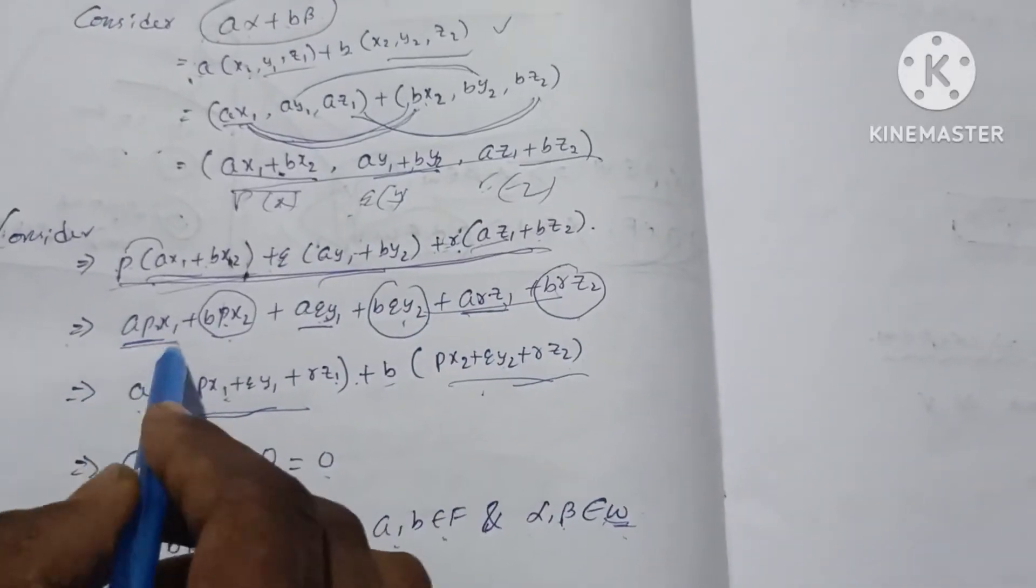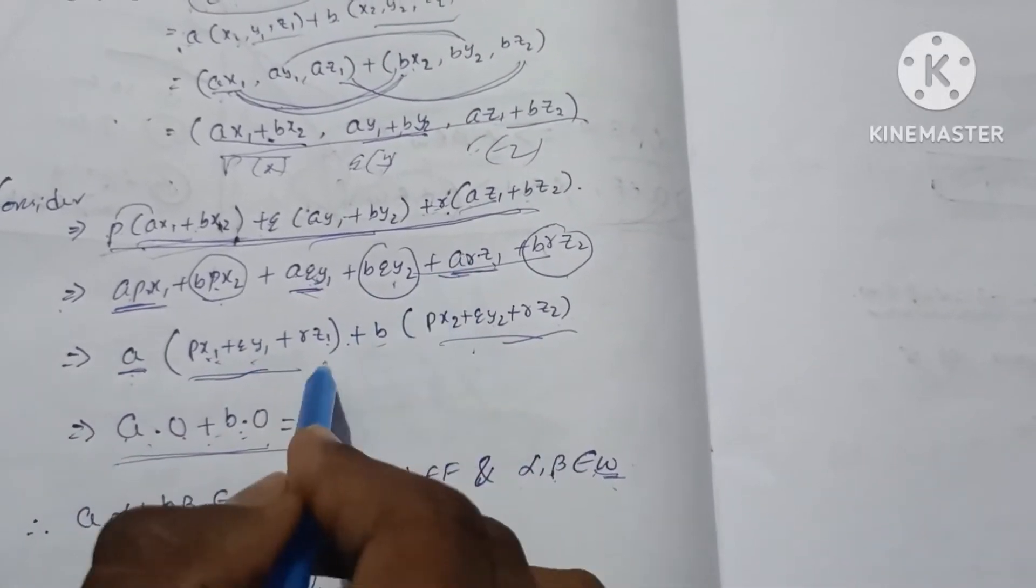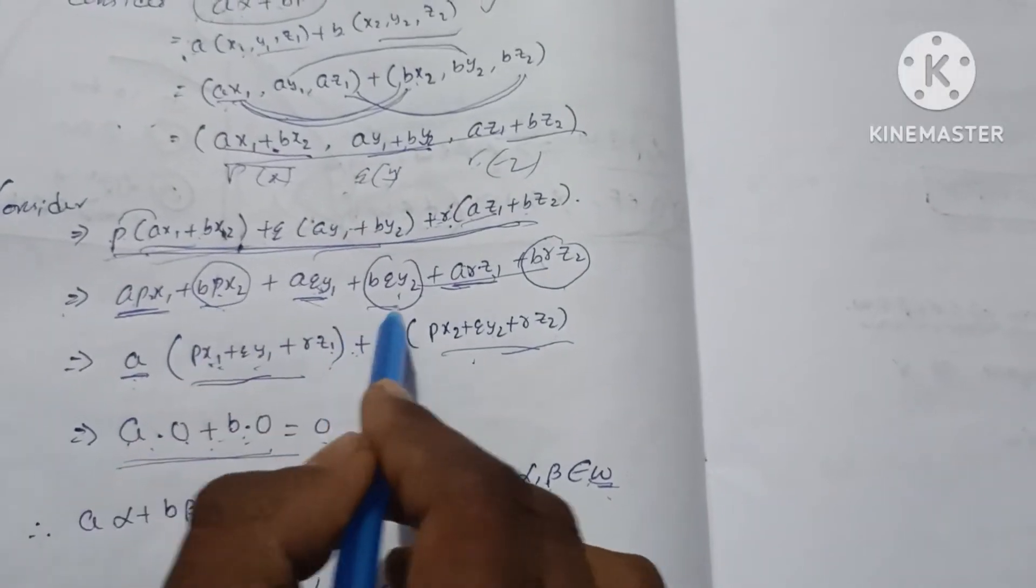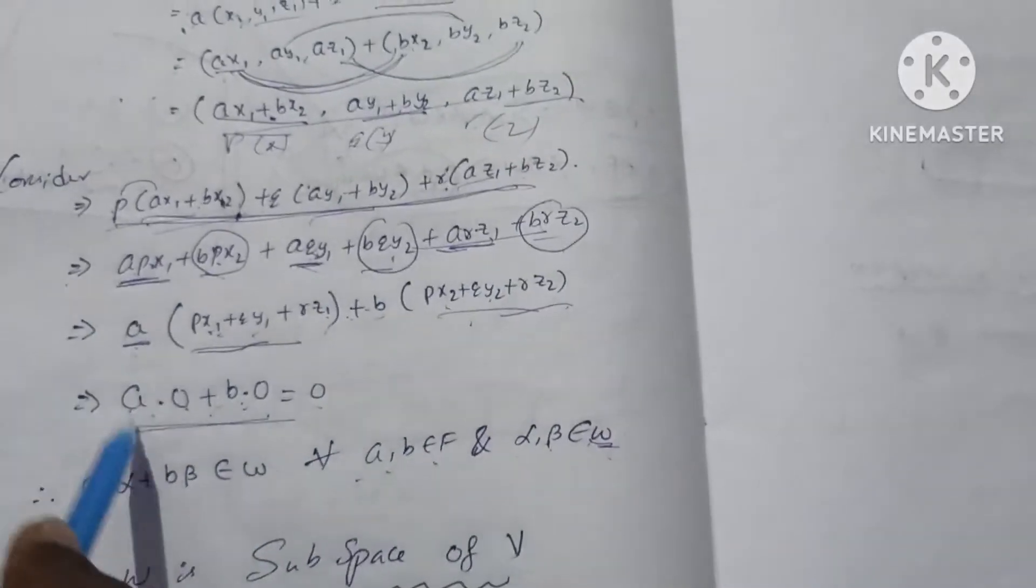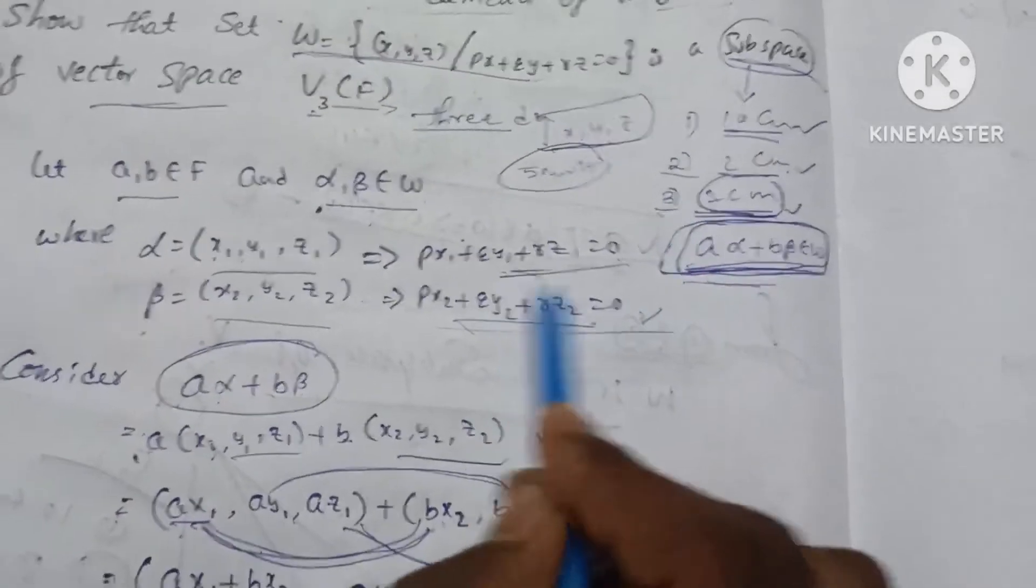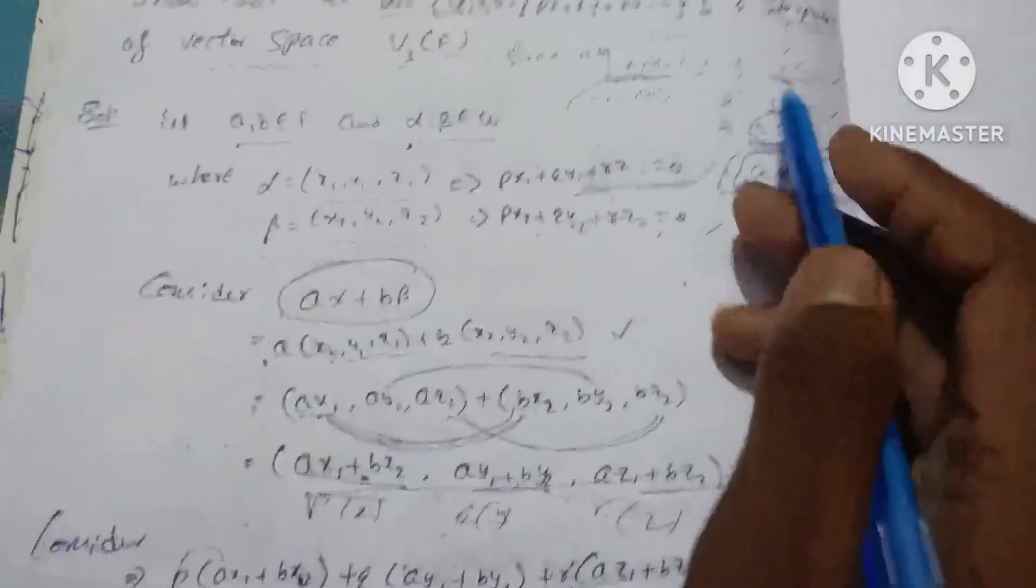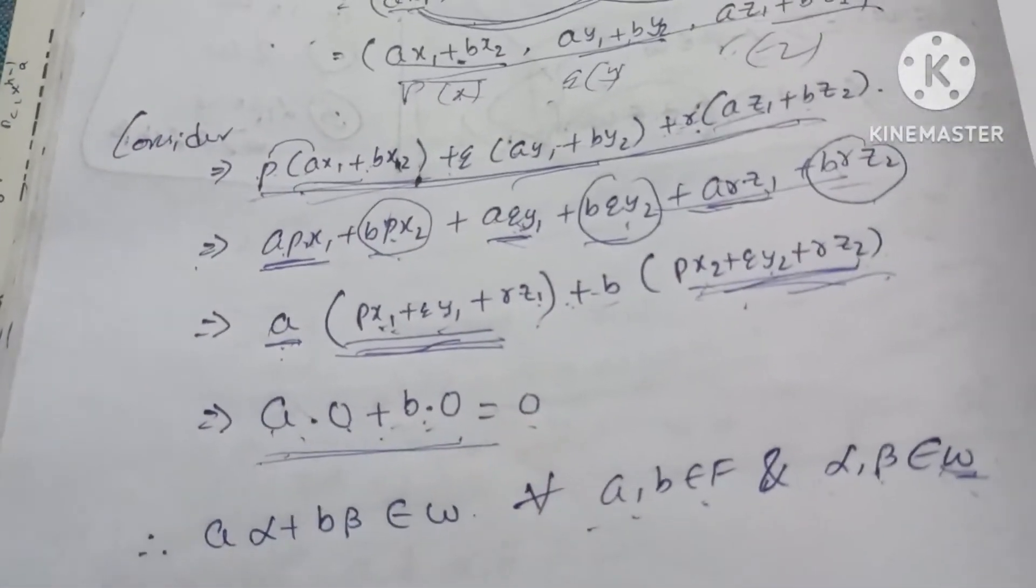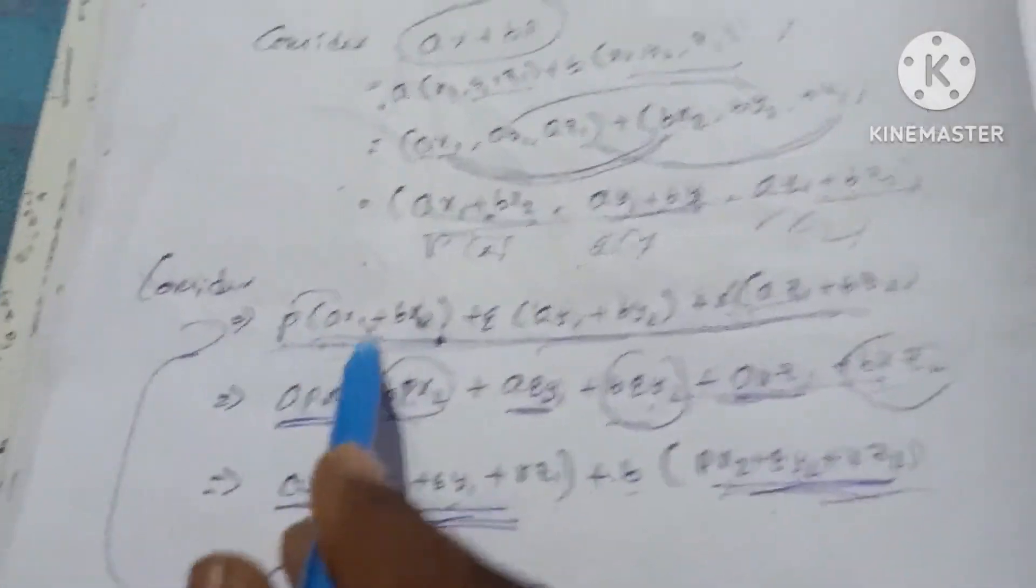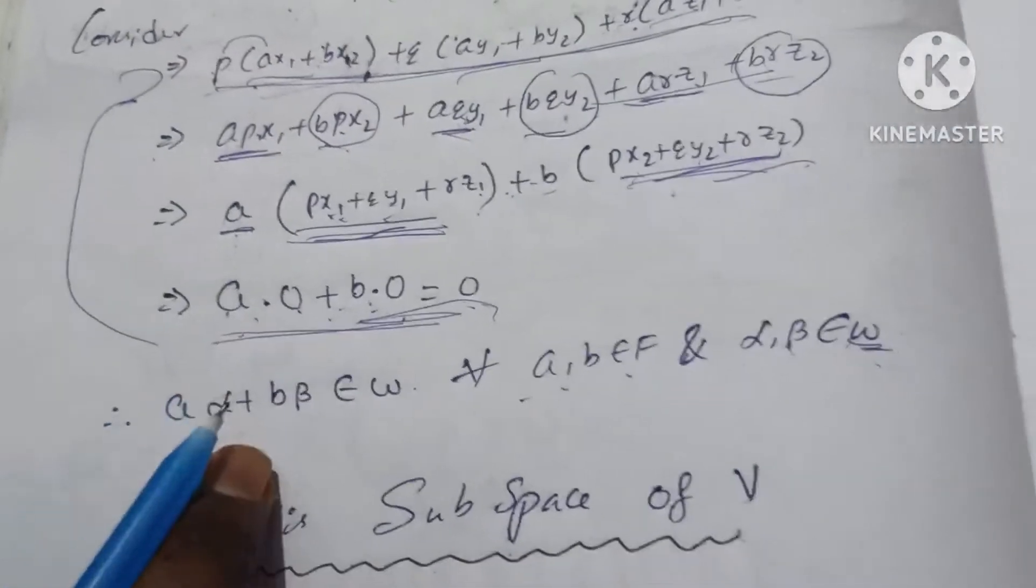This is a term for common. A common is px1, qy1, rz1 plus b common: px2, qy2, rz2. So a into this value is 0, that is a into 0, plus b into this value is 0, so a into 0 plus b into 0 is equal to 0. This value is equal to 0, so this equation is equal to 0. We will show a alpha plus b beta equals 0.